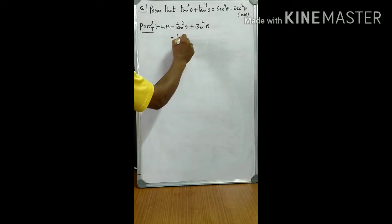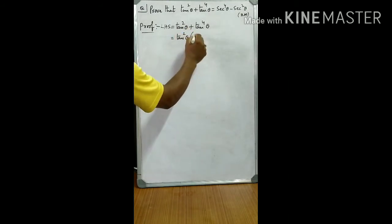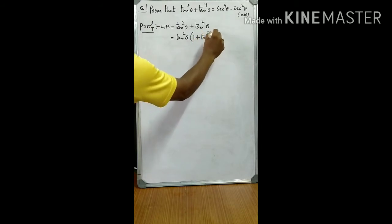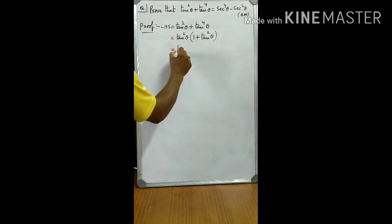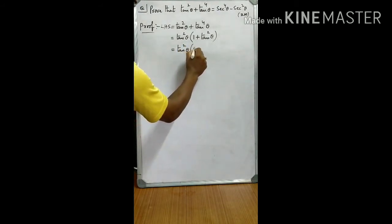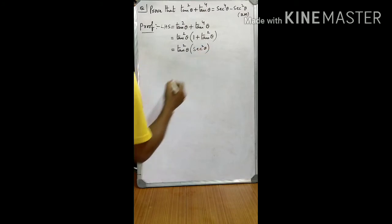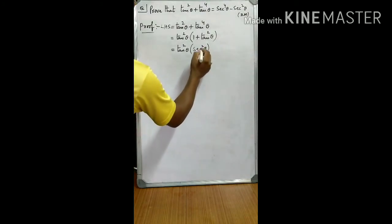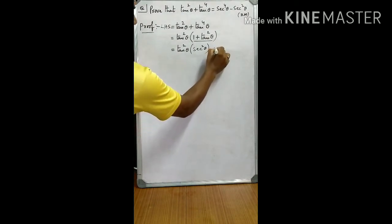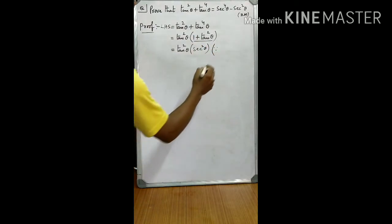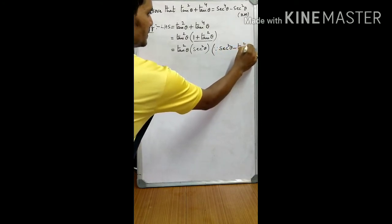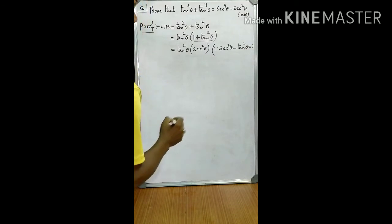Take tan squared theta common, which leaves 1 plus tan squared theta. Now, 1 plus tan squared theta can be written as secant squared theta. I wrote 1 plus tan squared theta as secant squared theta from the identity secant squared theta minus tan squared theta is equal to 1.